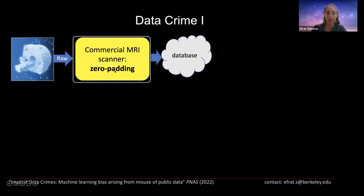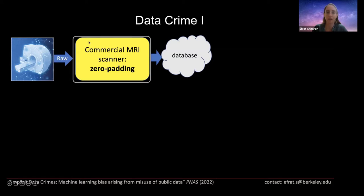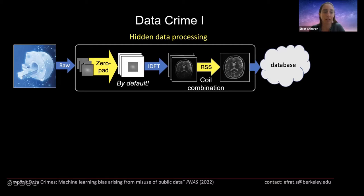Today I'm going to show you two pipelines and how they lead to biased results. Both are very typical of data found in public online databases. The first pipeline is implemented inside commercial MRI scanners — this is true for scanners from Philips, GE, and Siemens. If you run a scan in your own institution and get an image from the scanner, it is very likely that this pipeline was implemented. The scanner acquires raw k-space data, often using a multi-coil array, and then applies zero padding to the data by default. Zero padding means adding zeros in k-space around the acquired data.